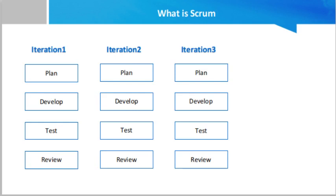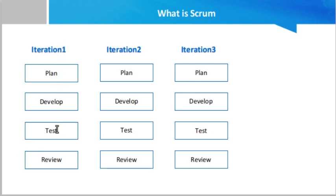How does the Scrum model solve this? In Scrum, we divide the work into multiple chunks. For example, if you are implementing an e-commerce solution with 40 tasks, you take 10 tasks first and do the planning, development, testing, review, and deployment. This is iteration one, or a sprint. A sprint is a three-to-four week time period. Then iteration two takes the next 10 tasks, and so on.